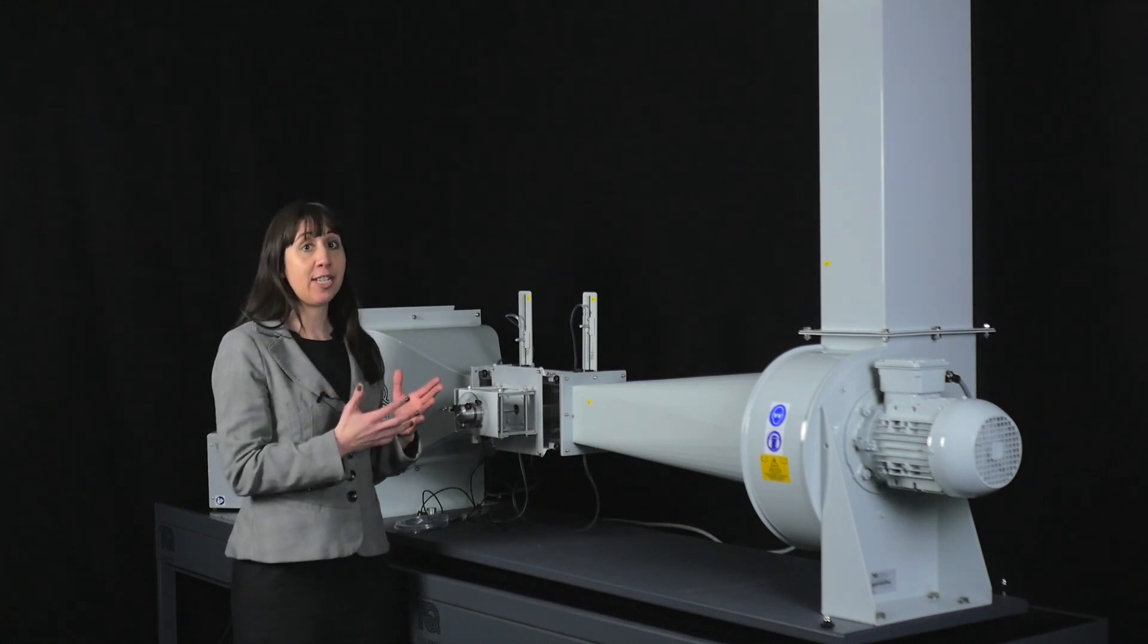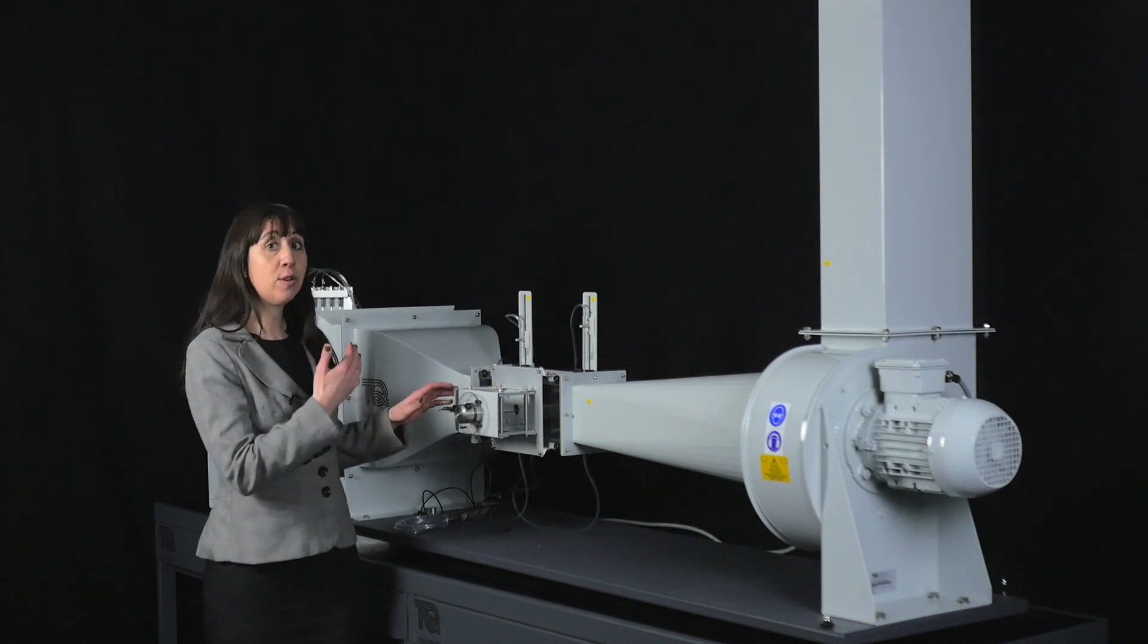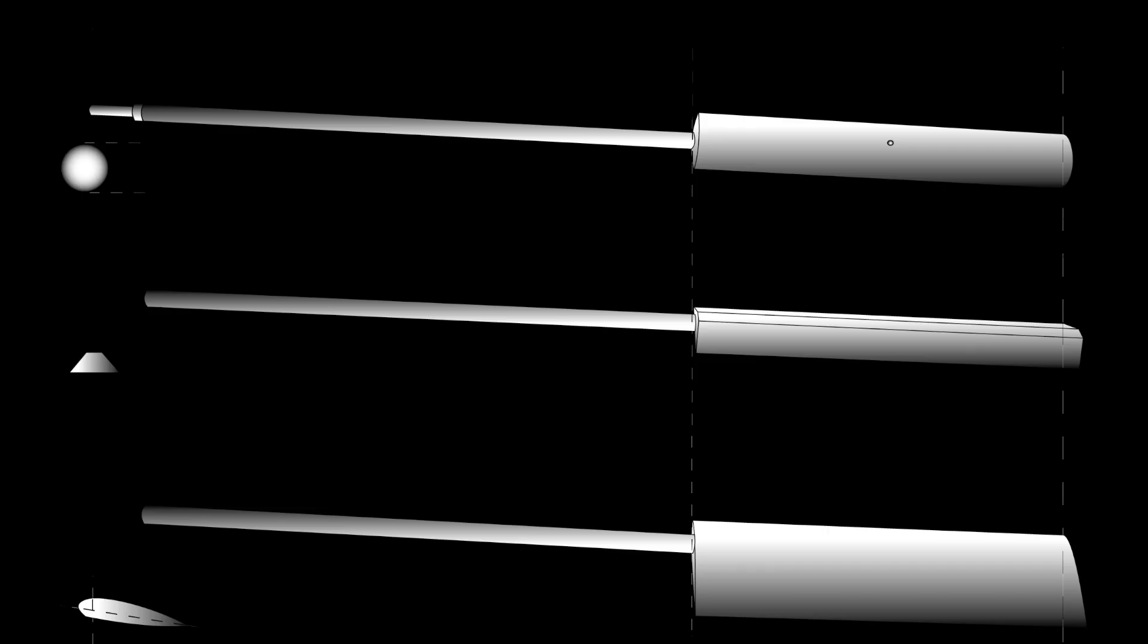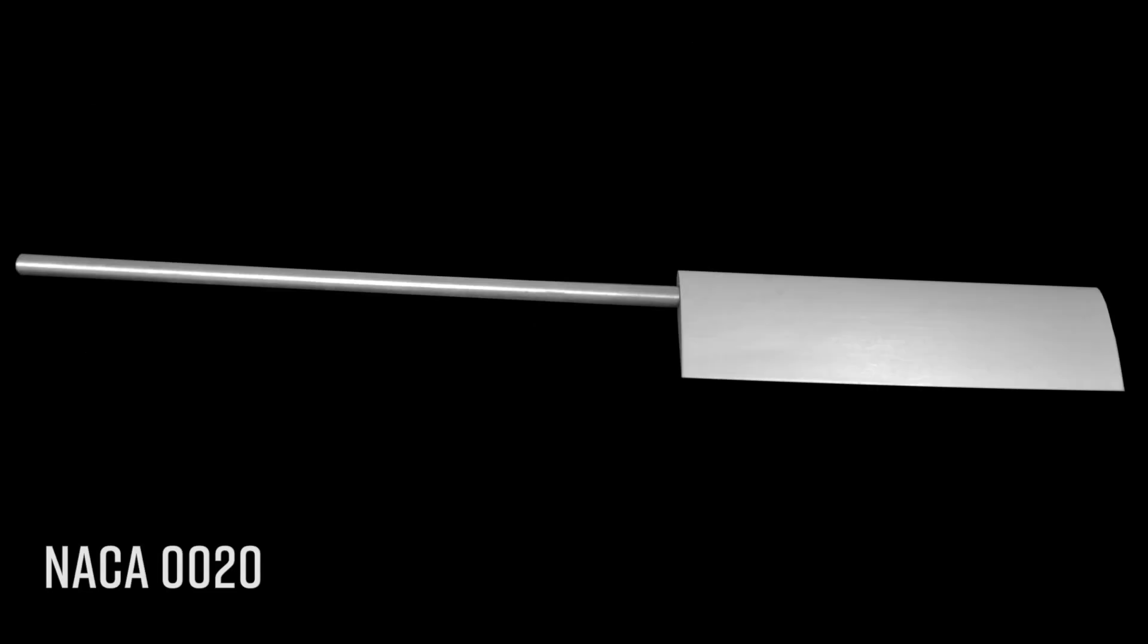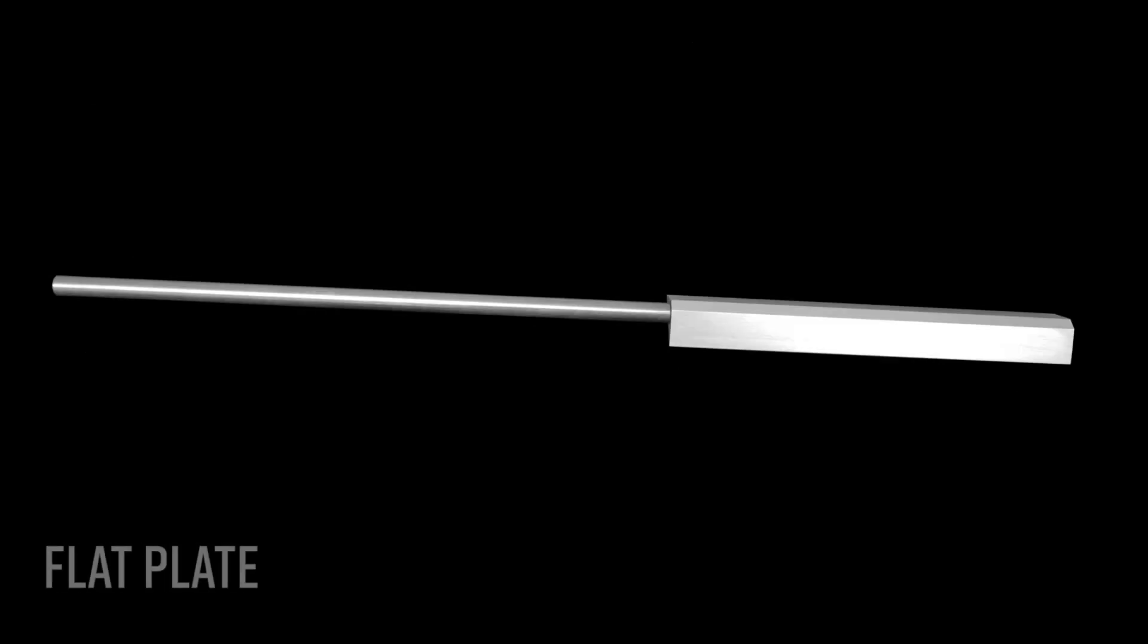Should you be creating your own 3D printed models, you can also mount these underneath. Three experiment models are included: the NACA 0020 aerofoil, a bluff body known as a flat plate, and a cylinder with pressure tapping.